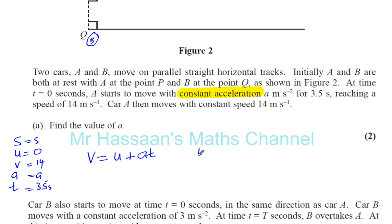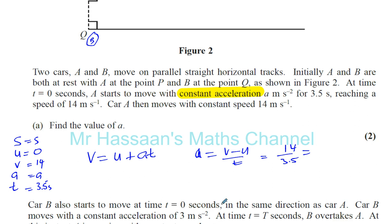So A is therefore V minus U over T, which is 14 divided by 3.5, which gives you 4. So A is 4 meters per second squared. That's part A. Now on to part B.